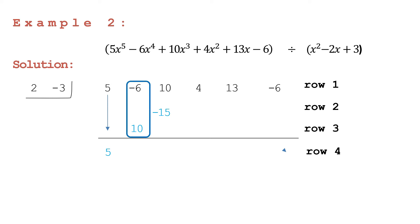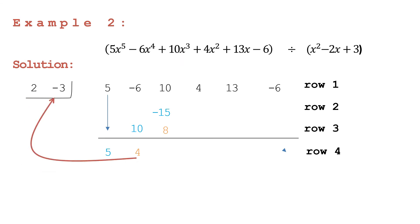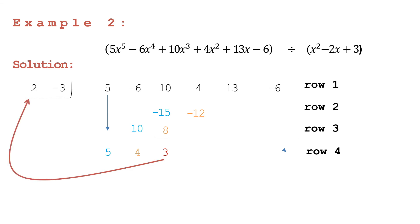Add the second column: negative 6 plus 10 is equal to positive 4. Then: 4 times 2 is equal to 8; write 8 in row three, third column. 4 times negative 3 is equal to negative 12; write negative 12 in row two, fourth column. Then add the third column: positive 10 plus negative 15 is equal to negative 5, and negative 5 plus 8 is equal to positive 3.